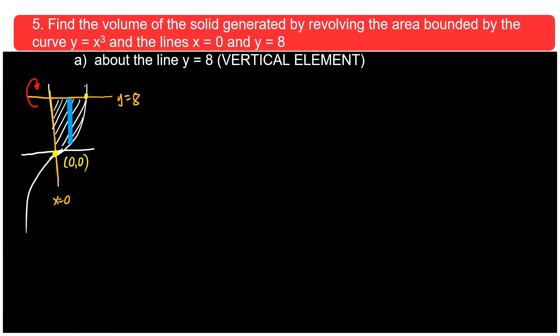You are revolving the area about letter A about the line y equals 8. So I would be revolving it about this. So let's go to the intersections. In here is an intersection. In there is another intersection. So when x equals 0, you can plug it in the equation. Y is 0. By the way, the equations are here. Y equals x cubed. Y equals 0. And x equals 0.